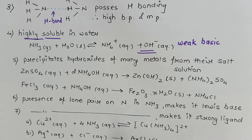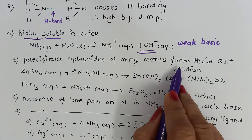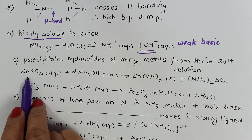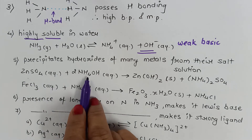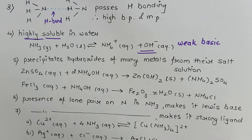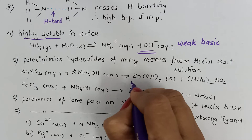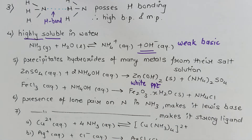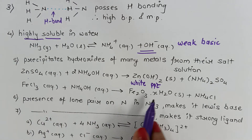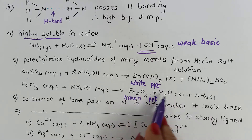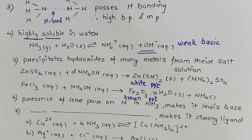Ammonia precipitates the hydroxides of many metals from their salt solutions. For example, when zinc sulfate is treated with ammonium hydroxide, we get zinc hydroxide (white precipitate) and ammonium sulfate. When ammonium hydroxide is treated with ferric chloride, it gives a brown precipitate of ferric hydroxide along with ammonium chloride.